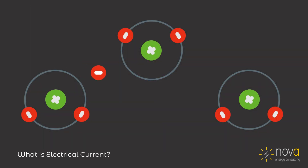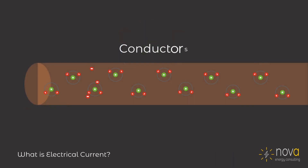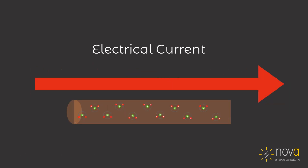In some materials, these electrons move relatively freely, jumping from atom to atom. We call these materials conductors, and the flow of electrons through these materials is what we call electrical current.